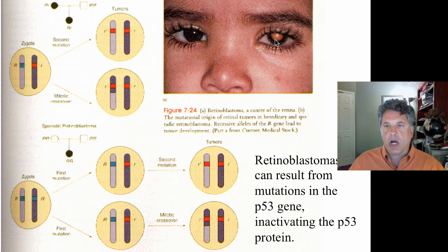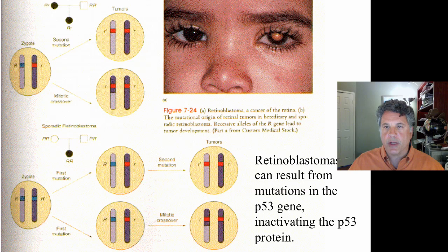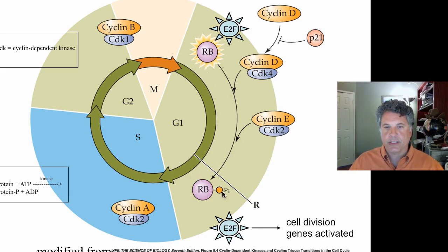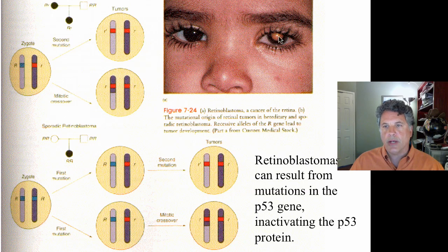This can be caused by mutations in the retinoblastoma gene which render the retinoblastoma protein inactive. In its inactive state, E2F will be activated no matter what. So the cell will keep dividing and will progress through the cell cycle. Her retinal cells have been induced to divide uncontrollably by virtue of having an inactive retinoblastoma protein and therefore active E2F transcription factor.